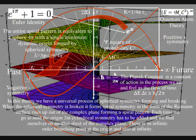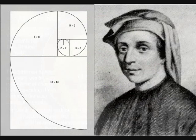This leads to the second prediction of this theory. Because this whole process can be seen as a process of spherical symmetry forming and breaking, it forms the imperfect spiral symmetry of life that is visible in nature.